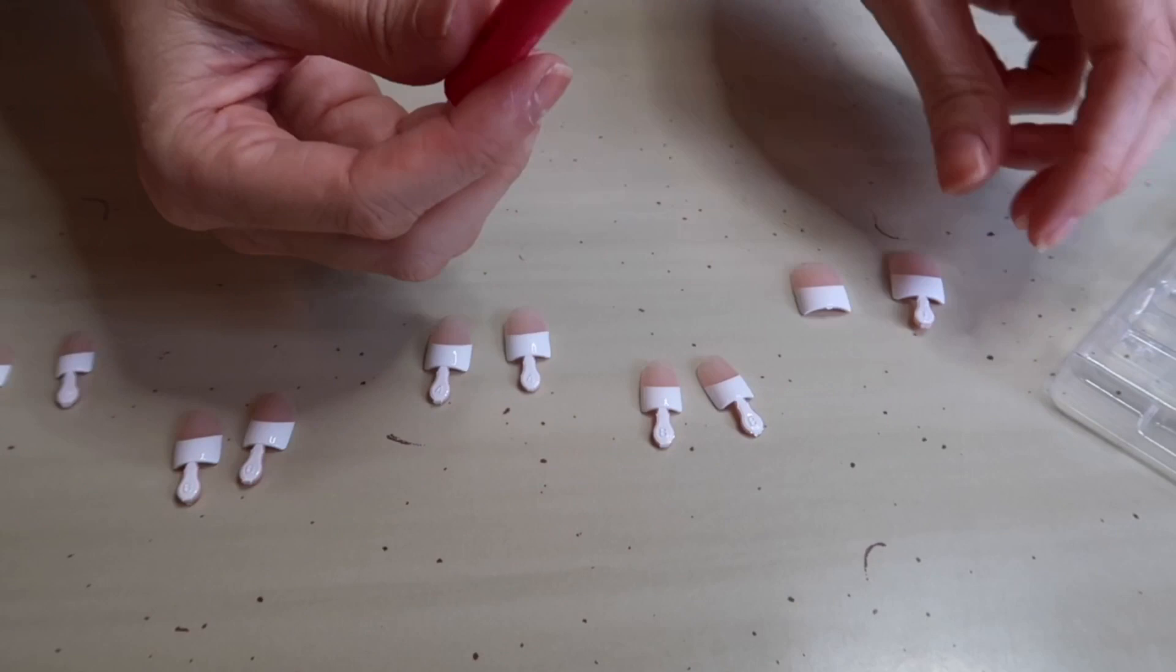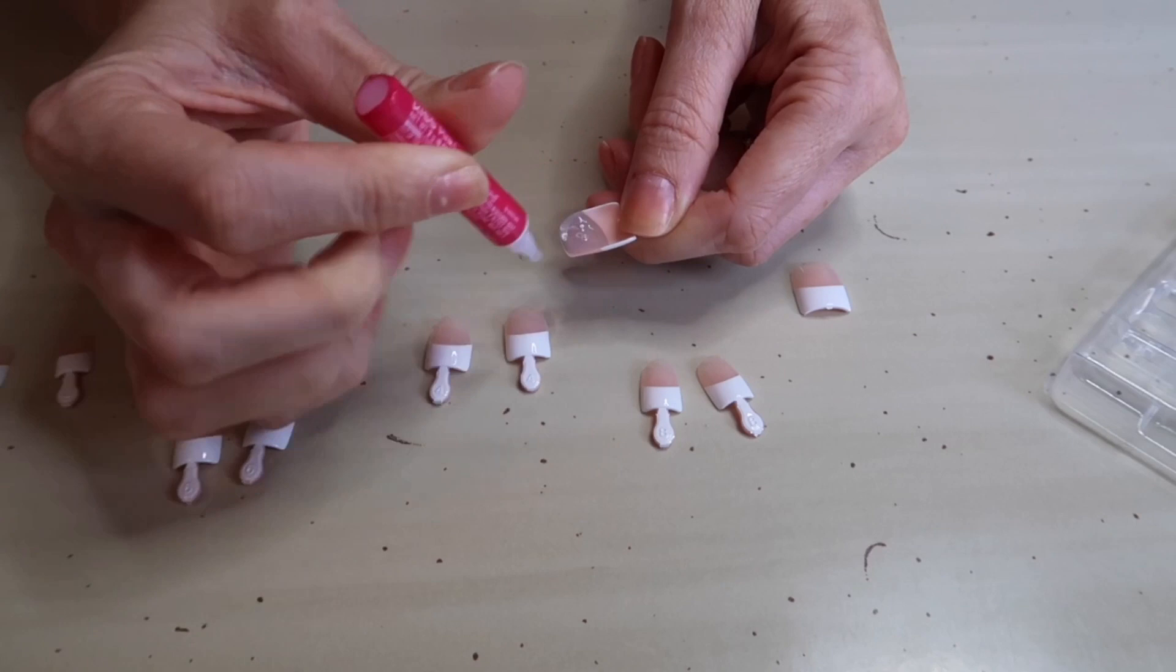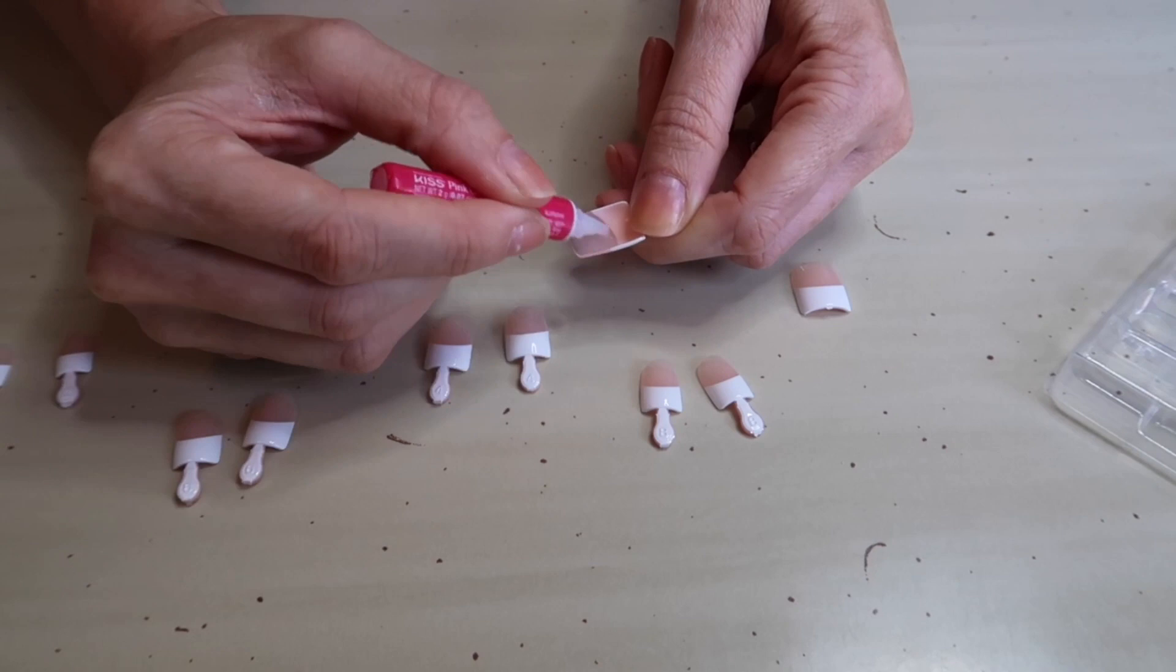So now that I have all of those lined up, I'm going to show you the best way to apply the glue and apply the nails so that you don't get any air bubbles because when you have clear nails like this, you want to be sure you don't have any air bubbles. That's going to be a dead giveaway that these are glued on. So you're going to want to put a very generous amount of glue on the actual plastic nail.